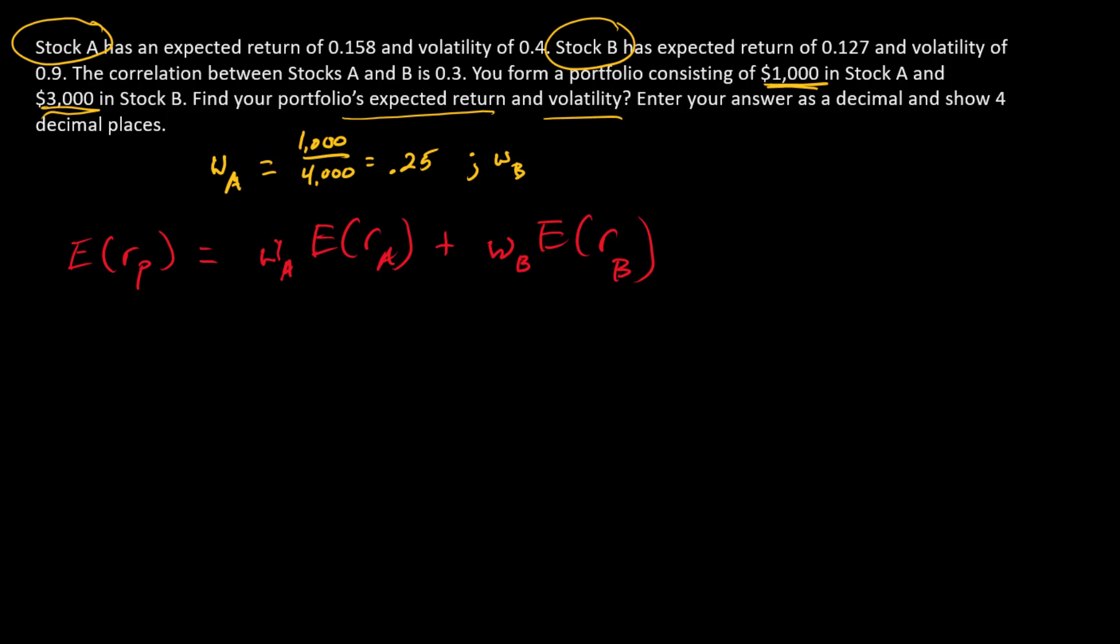So weight in A is $1,000 divided by $4,000 or 0.25. Weight in stock B is everything else. So 1 minus 0.25 is 0.75, or we could just calculate it outright. $3,000 divided by $4,000, so that is 0.75. Let me put a box around this so we'll keep it nice and safe. This is some information that we're going to use for both the expected return and the portfolio volatility calculations.